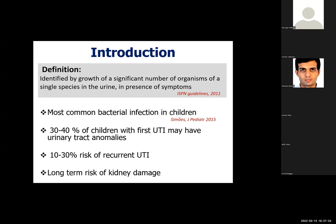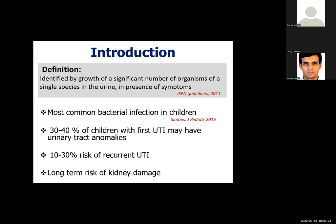Urinary tract infection is defined based on symptoms, which may be non-specific in younger kids, but requires urine culture positivity or significant growth of a single organism. UTI is one of the most common bacterial infections, more so in younger kids. Almost 30 to 40 percent of children who develop febrile UTI may have underlying abnormality of the urinary tract, and 10 to 30 percent may have recurrence over the next six to 12 months, with a definite association with long-term kidney damage.